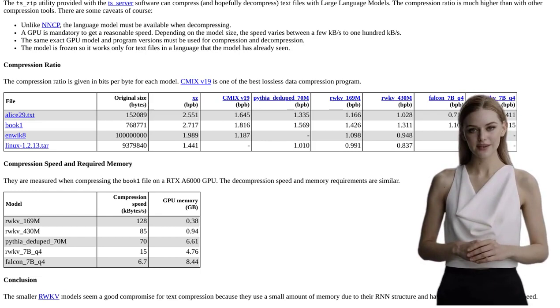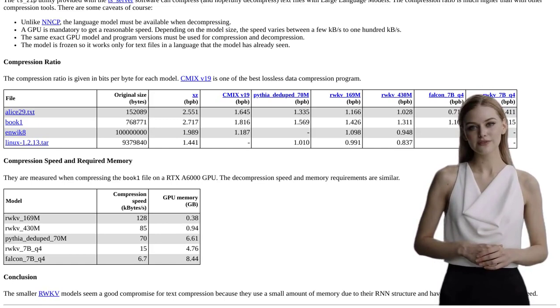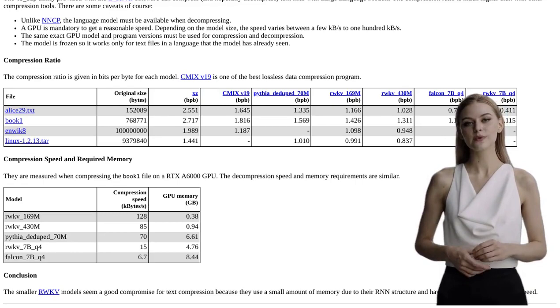Speaking of lossy compression, it's a technique that sacrifices some data to achieve even higher compression ratios. While ts-zip focuses on lossless compression, it's interesting to explore the possibilities of combining both techniques for even greater efficiency.